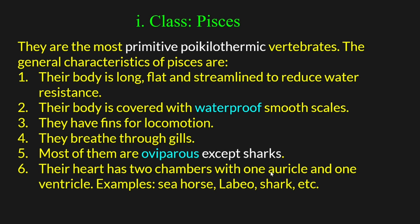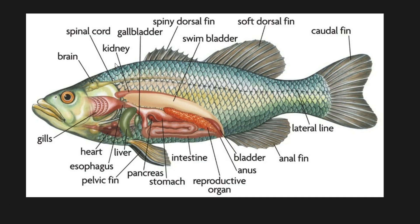Pisces have a two-chambered heart with one auricle and one ventricle. Examples include seahorse, shark, and Labeo (rohu). Notable features include waterproof scales, fins, and a swim bladder which helps them maintain buoyancy in water.